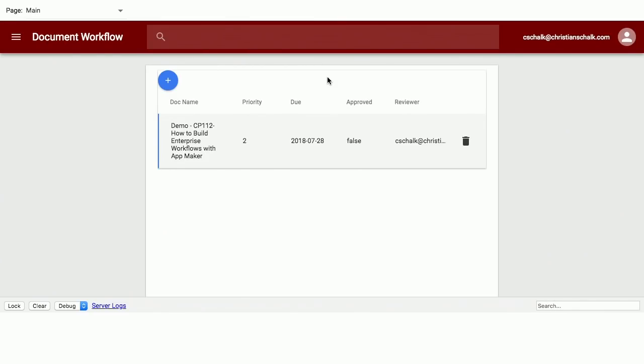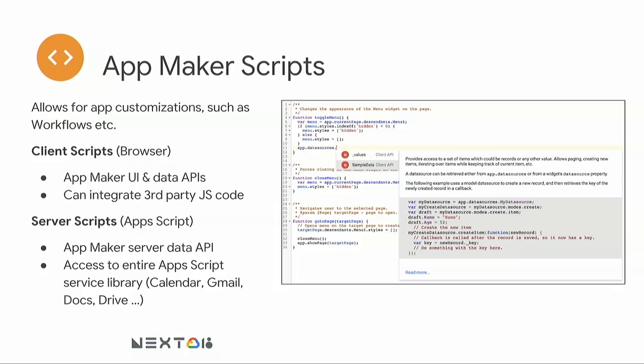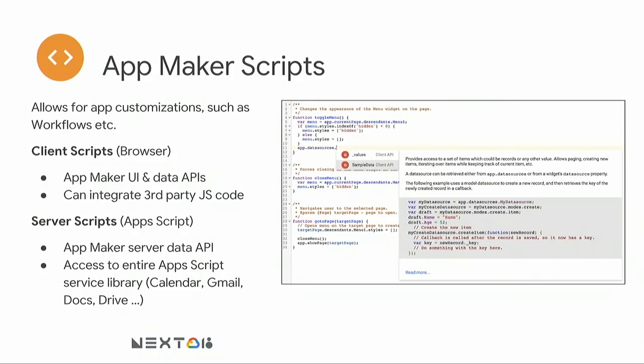In order to implement the workflow part, that's the scripting. Scripts are two flavors — one is client-side, running in the browser, which is straight JavaScript. You can write your own JavaScript, import any third-party library like jQuery, and use App Maker's data API to insert, update, delete from your client, as well as UI manipulation — showing popups, dialogues, navigating to different pages. On the server, because it's running on Apps Script, you have access to all those libraries, and that's really where you'll be able to implement the workflow, like sending emails.